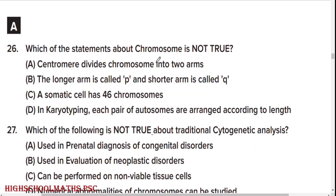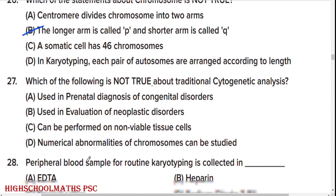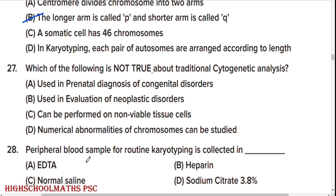In karyotyping, each pair of autosomes are arranged according to length. Which of the following is not true about traditional cytogenetic analysis? Option C is the right answer — it cannot be performed on non-viable tissue cells. True statements: used in prenatal diagnosis of congenital disorders; used in evaluation of neoplastic disorders; numerical abnormalities of chromosomes can be studied.